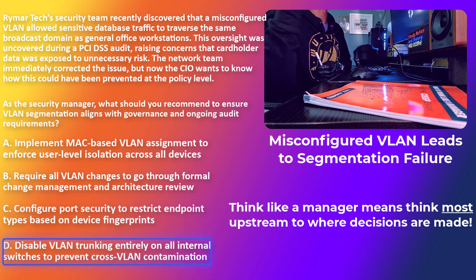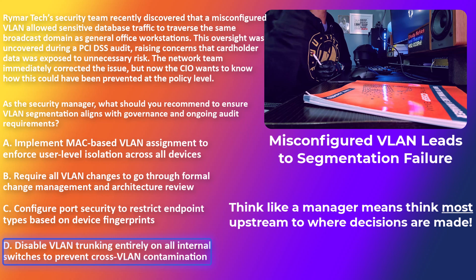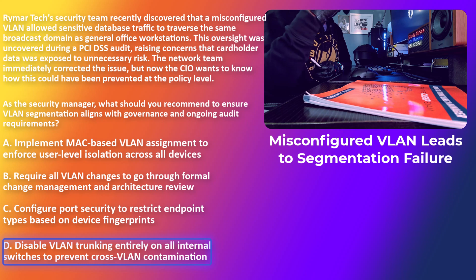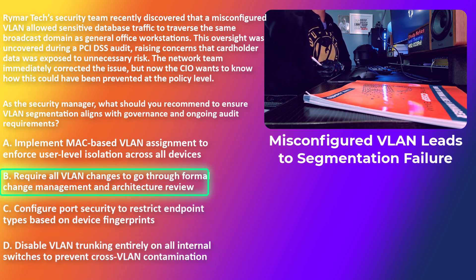Disabling VLAN trunking is an overly extreme approach. As you've heard from other instructors, the absolute answer is usually not the right answer. Choice D says disable VLAN trunking entirely on all internal switches — that word 'all' encompasses everything, and that's usually not the answer. As a CISSP, especially in the real world, you can't just say no to what executives need. While disabling trunking could theoretically stop lateral movement, it also cripples legitimate multi-VLAN designs and limits scalability. Companies have more than one VLAN. It solves a symptom, not a root issue.